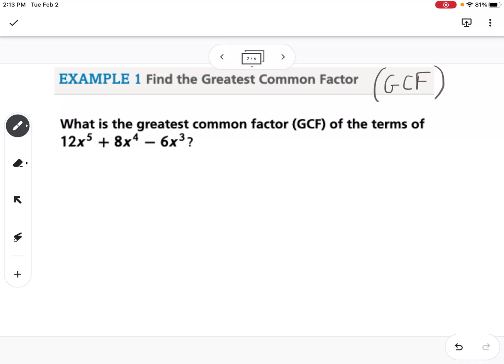What you want to do is make a factor tree for each of these numbers, so I'm going to write this out so I have more space. So 12x to the 5th plus 8x to the 4th minus 6x cubed.